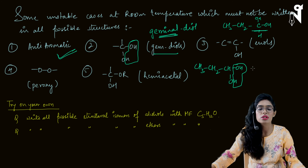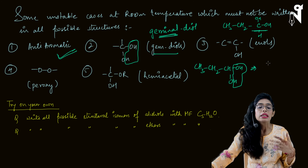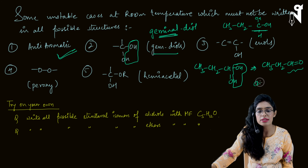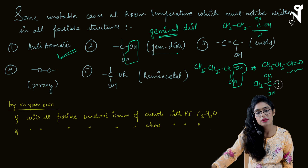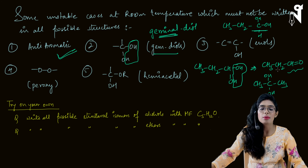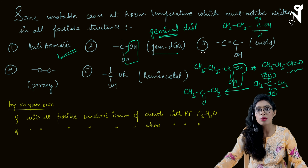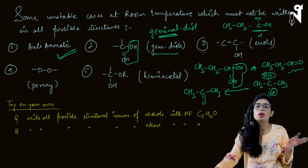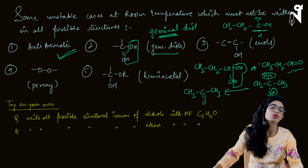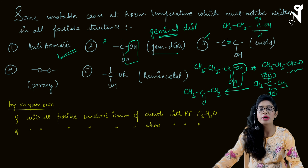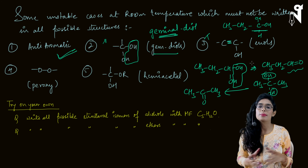If the geminal diol is on a terminal carbon, it converts to CH3CH2CHO (aldehyde). If it's on a middle carbon, it converts to CH3COCH3 (ketone). So diols with two OH groups on the same carbon are not stable — they get converted to aldehydes or respective ketones. We do not write geminal diols as functional isomers.